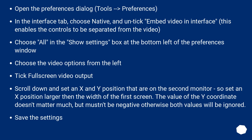Choose All in the Show Settings box at the bottom left of the Preferences window. Choose the video options from the left. Tick Full Screen Video output. Scroll down and set an X and Y position that are on the second monitor — set an X position larger than the width of the first screen. The Y coordinate value doesn't matter much, but must not be negative, otherwise both values will be ignored. Save the settings.